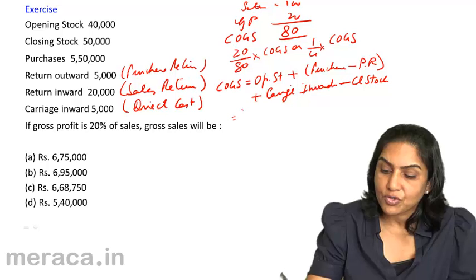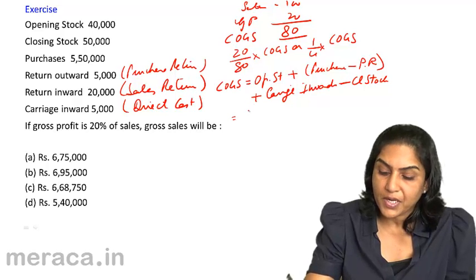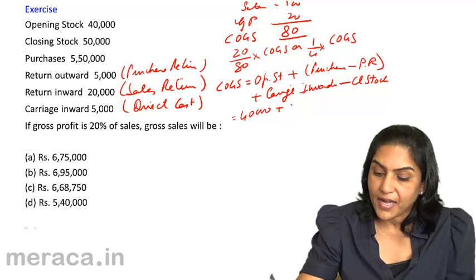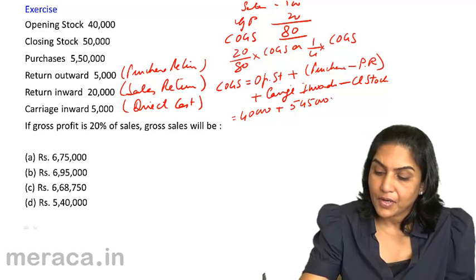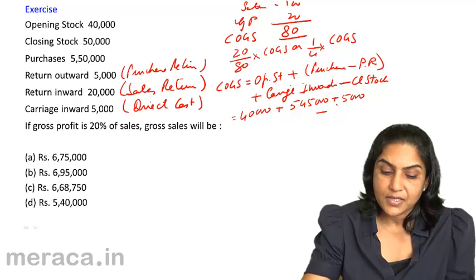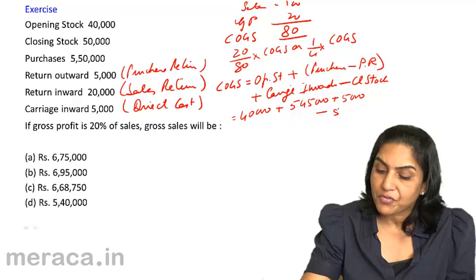Working this out, we get this is equal to opening stock of 40,000 plus net purchases of 5,45,000 plus carriage inward of 5,000 minus closing stock of 50,000.